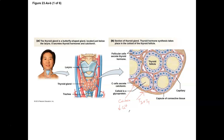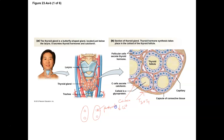Calcitonin decreases blood calcium levels. On the posterior side of the thyroid gland, if you could view the backside, you would actually see the parathyroid glands. The parathyroid glands are their own glands, and the parathyroid glands produce parathyroid hormone. Parathyroid hormone increases calcium levels.